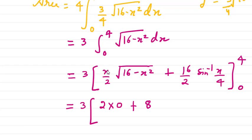So here we'll get 16/2 = 8, times sin⁻¹(1), minus—this thing again will become 0, and here also the other thing will become 0. So we only get 3 × 8 × sin⁻¹(1).